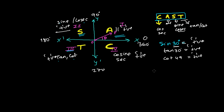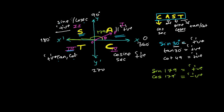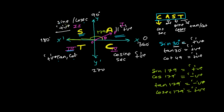Suppose I say sine of 179 degrees — 179 is just a little smaller than 180, so it falls in the second quadrant. In the second quadrant sine is always positive, so this value is positive. If instead I had cosine of 179 degrees, I would get a negative value because cosine is negative in the second quadrant — cosine is positive only in the fourth quadrant. Similarly, tan 179 would also be negative.